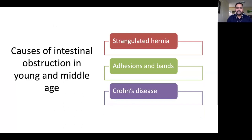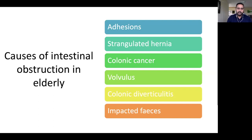In young and middle-aged patients, the common cause is strangulated hernia. Previous surgeries leading to adhesions and bands must also be considered. Crohn's disease, an intramural disease, causes constriction of the small bowel leading to obstruction. Cancers are possible in middle-aged people but are rare compared to elderly patients.